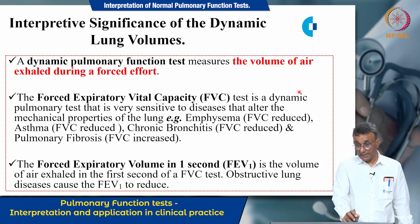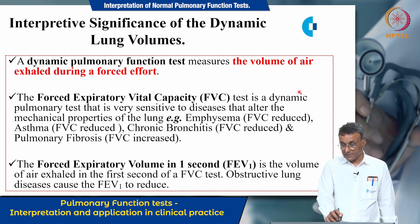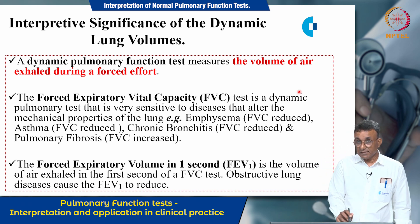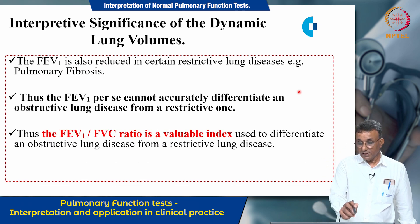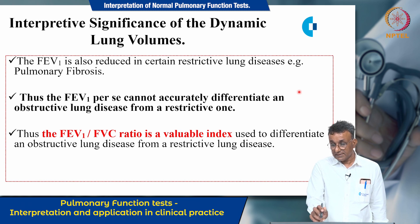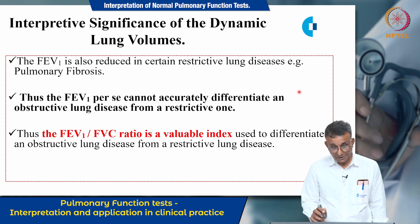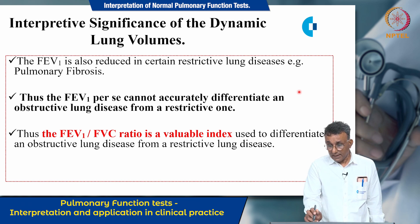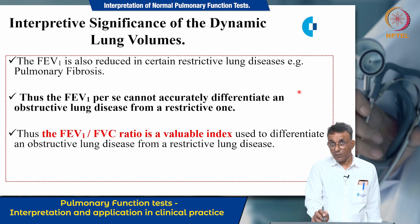The forced expiratory volume in one second (FEV1) is the volume of air exhaled in the first second of an FVC test. Obstructive lung diseases cause FEV1 to reduce, but it is interesting to note that FEV1 is also reduced in certain restrictive lung diseases such as pulmonary fibrosis. Therefore, FEV1 per se cannot actually differentiate an obstructive lung disease from a restrictive one.